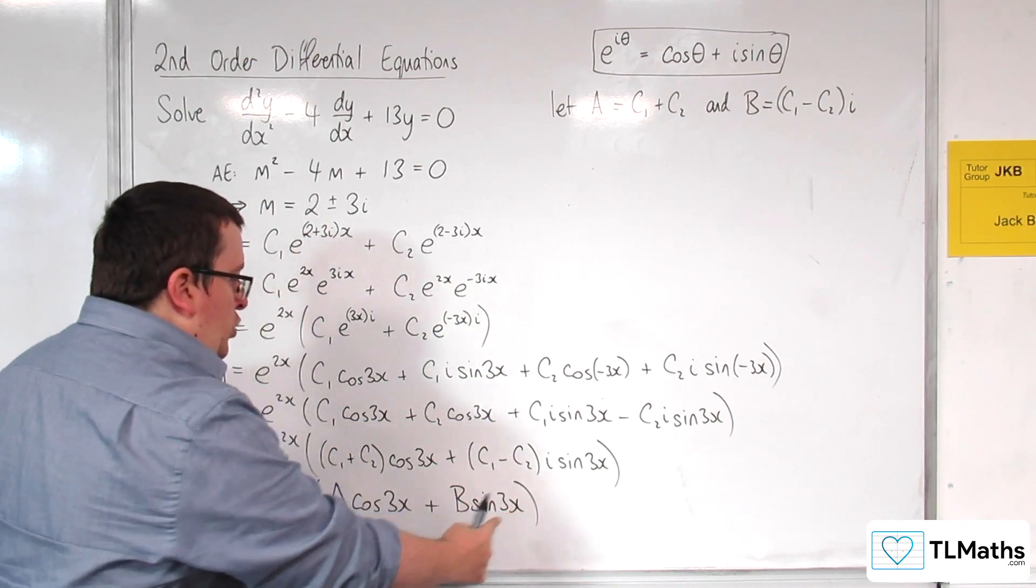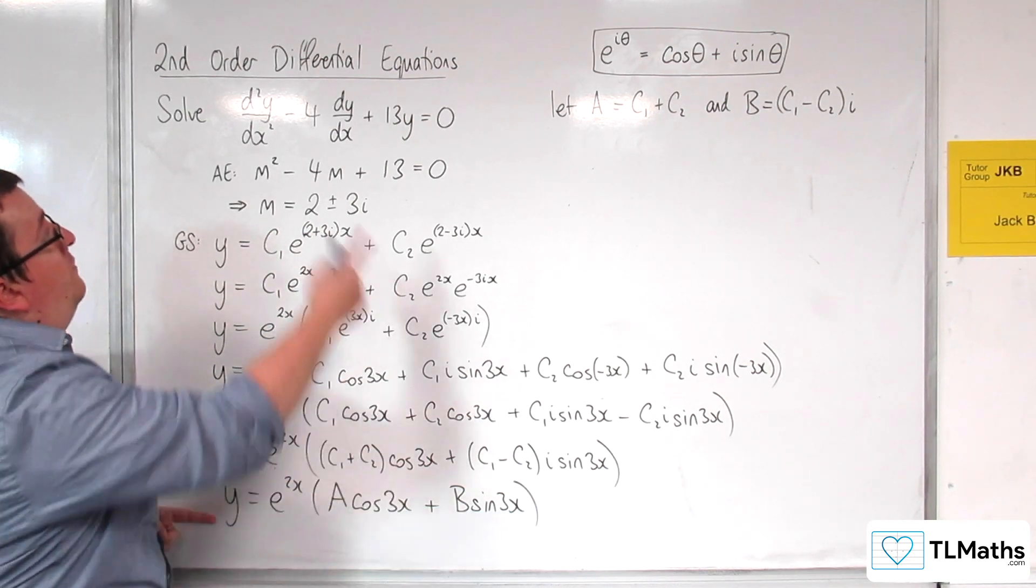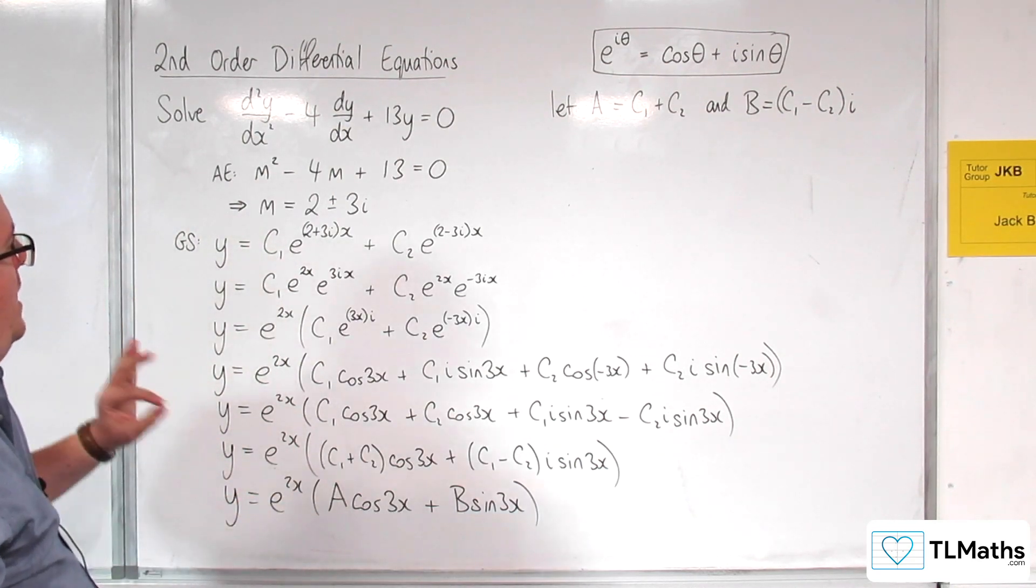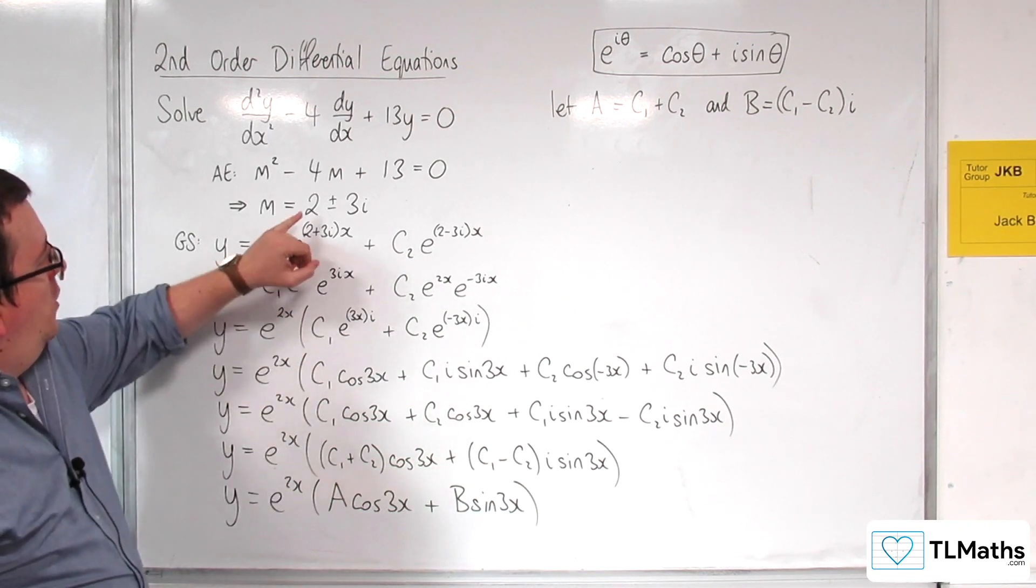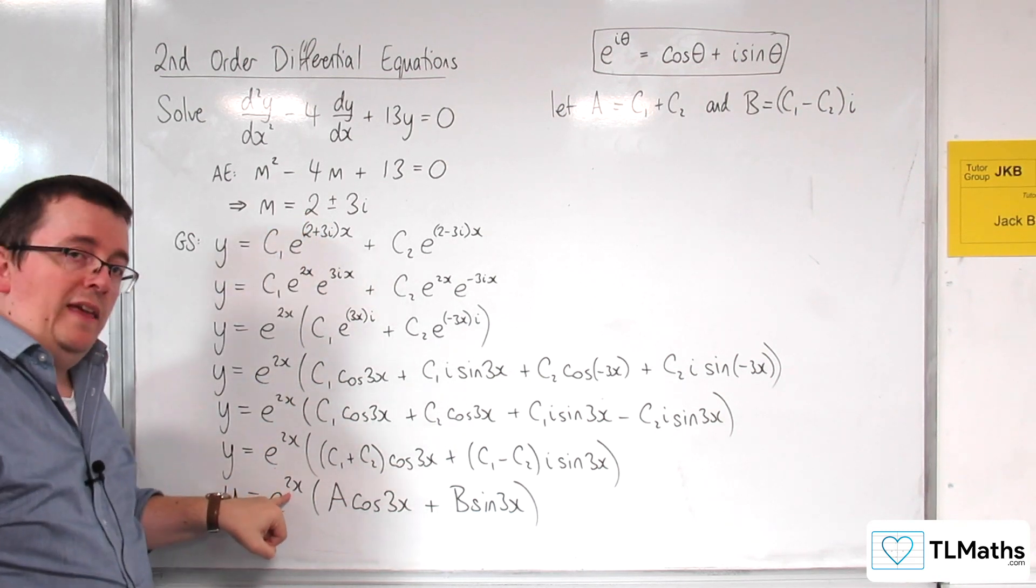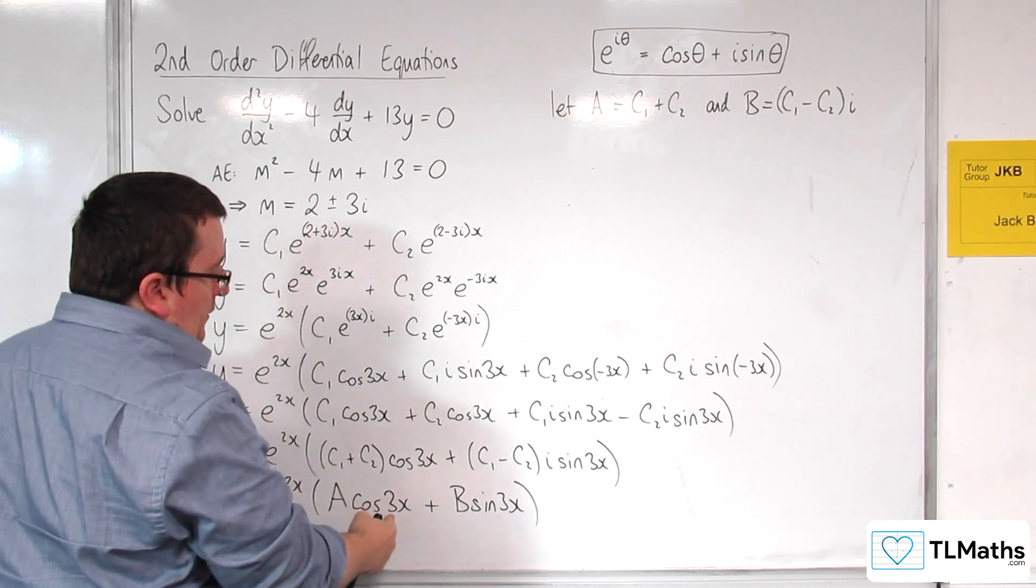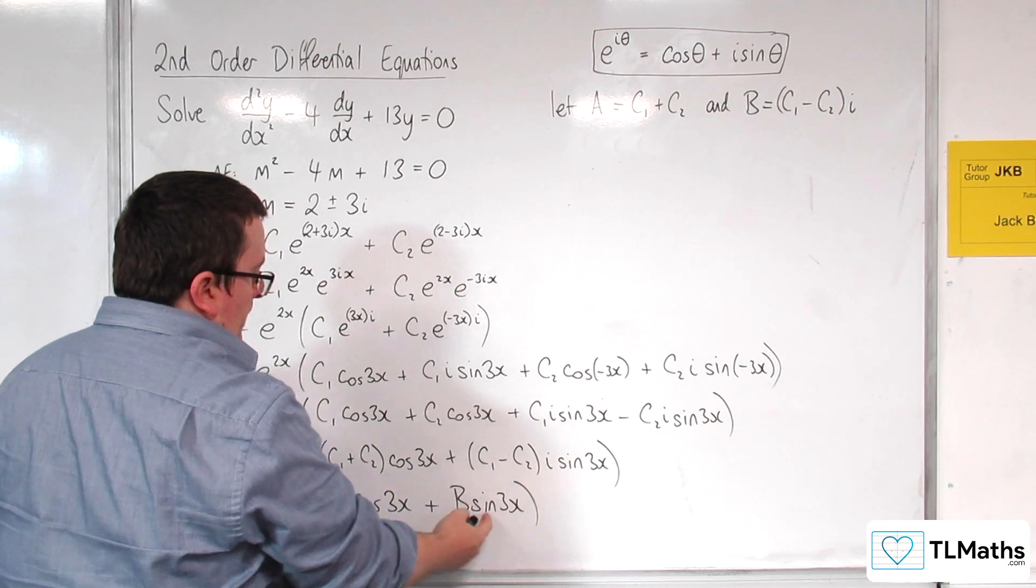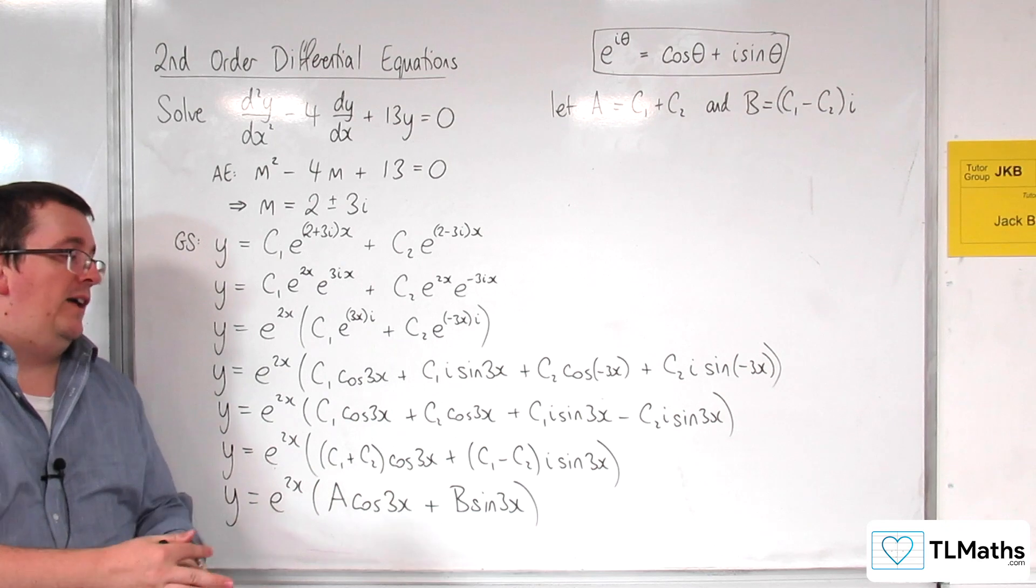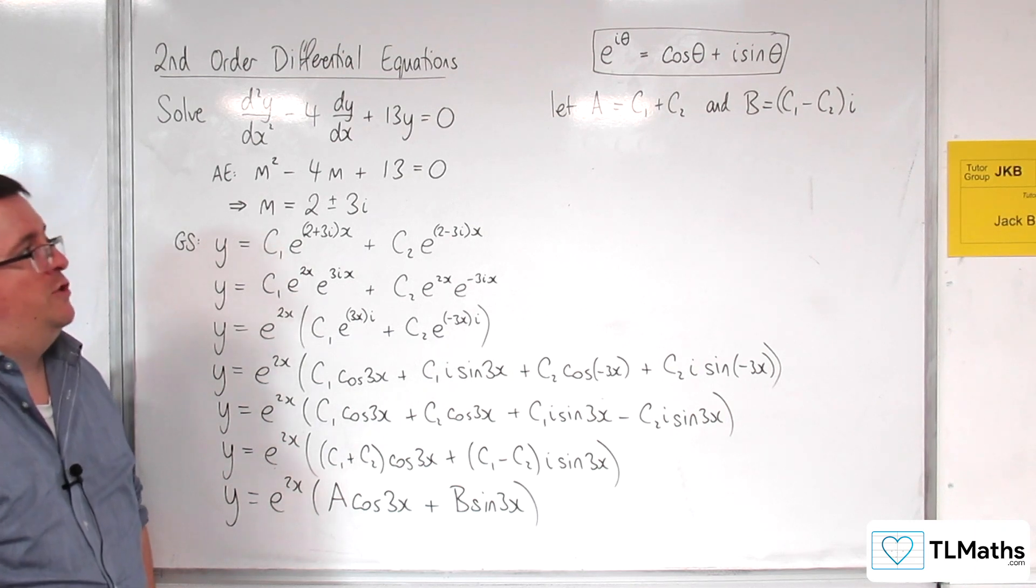And that's going to leave me with y is equal to e to the 2x times a cosine 3x plus b sine 3x. And this is the general form of the, well, the general solution of this differential equation. This is the one that we want to hop straight to. So where we've got the real part of the complex root of the auxiliary equation being the coefficient of x. And the imaginary part being the coefficient of x inside cosine and sine. And the a and the b are constants. But we would have to, if we wanted to find those out, we'd have to have two bits of information about our curve. So two initial conditions.